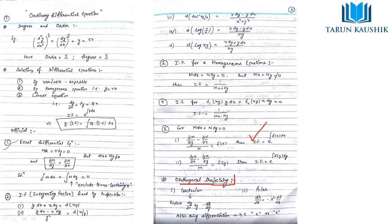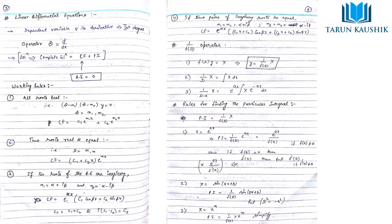Orthogonal trajectory is very important; many questions have been asked from this topic. For a simple equation, just differentiate with respect to x or y as given. There are two forms: Cartesian form and polar form. In Cartesian form, calculate the differentiation, eliminate all constant values, then replace dy/dx by −dx/dy and solve. In polar form, differentiate to get dr/dθ, then replace dr/dθ by −r² dθ/dr.